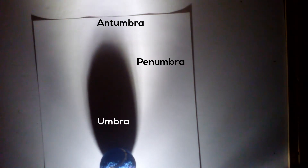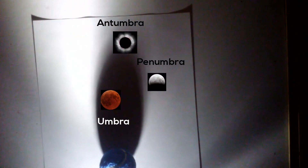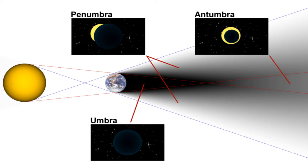Now let's take a look at what different eclipses you see according to which part of the shadow you are in. Here are those same shadows in a slightly different picture. You have the Umbra, which is the darkest portion. The edges are the Penumbra. And then where the Umbra ends you have the Antumbra.